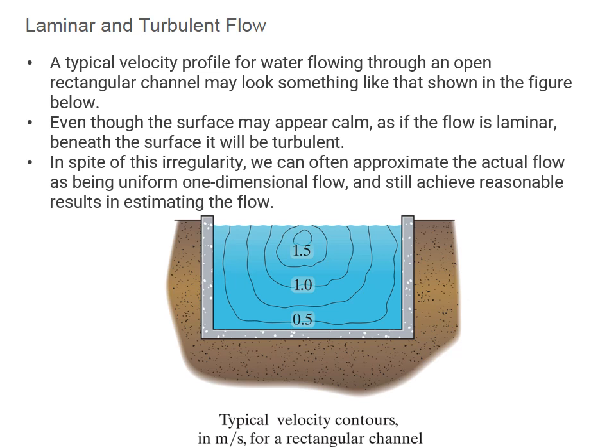When talking about flow, it is often important to distinguish between laminar flow and turbulent flow. A typical velocity profile for water flowing through an open rectangular channel may look something like the figure shown. Even though the surface may appear calm as if the flow is laminar, beneath the surface it will often be turbulent. In spite of this irregularity, we can often approximate the actual flow as uniform one-dimensional flow and still achieve reasonable results.